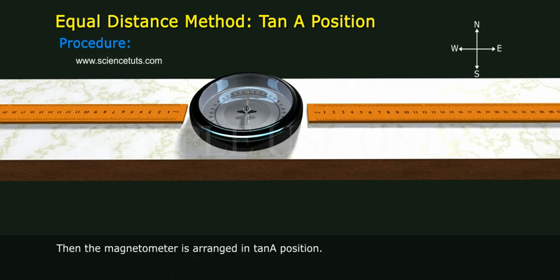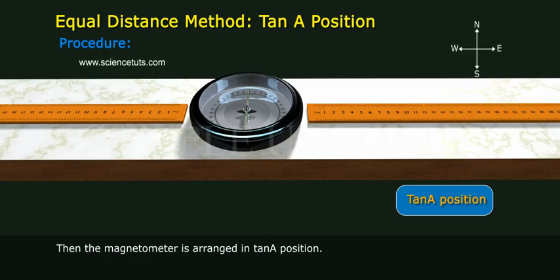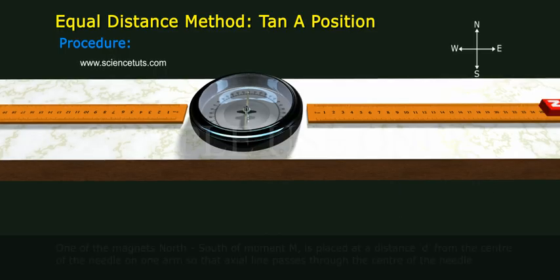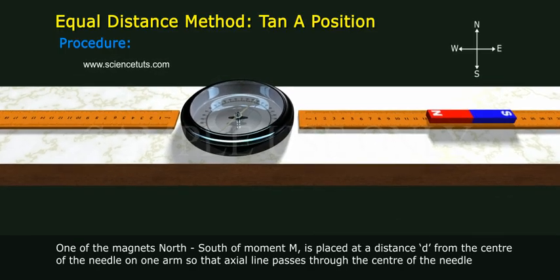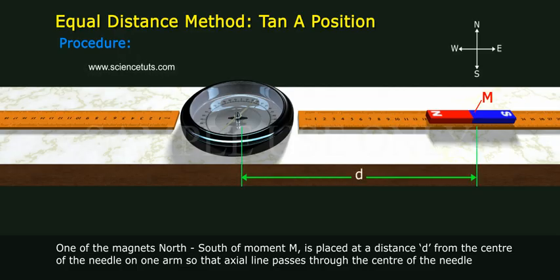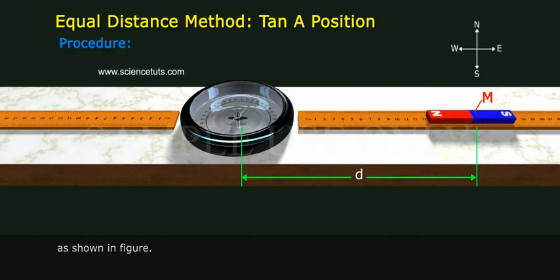Then the magnetometer is arranged in Tan A position. One of the magnets of north-south moment M is placed at a distance d from the center of the needle on one arm, so that the axial line passes through the center of the needle, as shown in the figure.